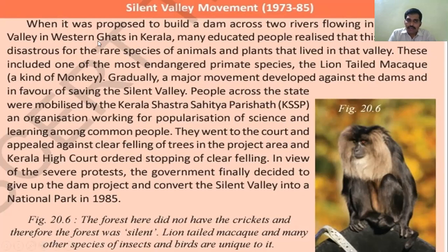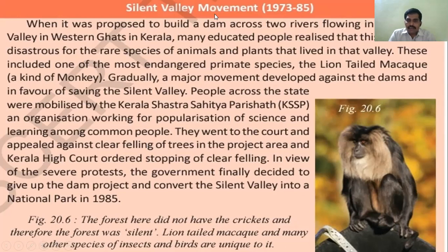Gradually a major movement developed against the dams and in favor of saving Silent Valley. People across the state were mobilized by Kerala Shastra Sahitya Parishat (KSSP), an organization working for the popularization of science and learning among common people. They filed a case in the Kerala High Court, which ordered stopping of clear felling. In view of these severe protests, the government finally decided to give up the dam project and converted Silent Valley into a national park in 1985.